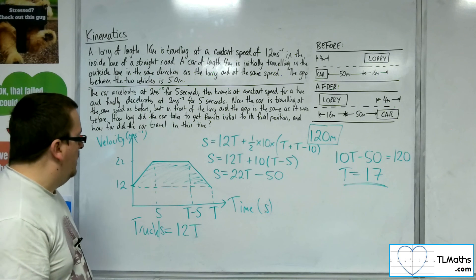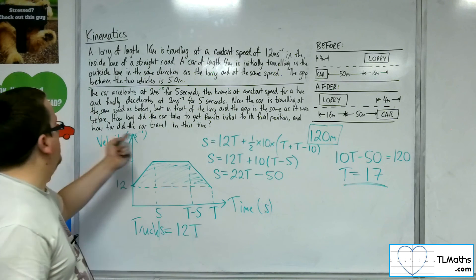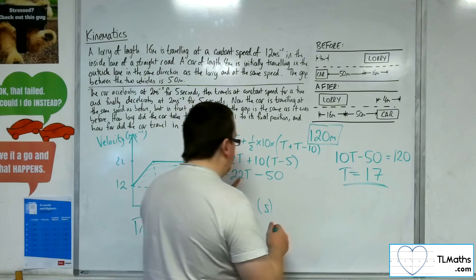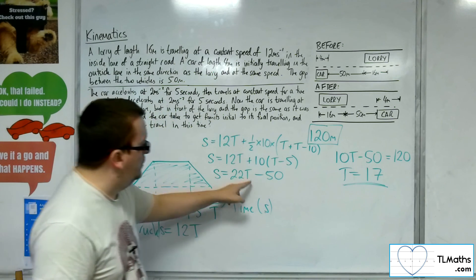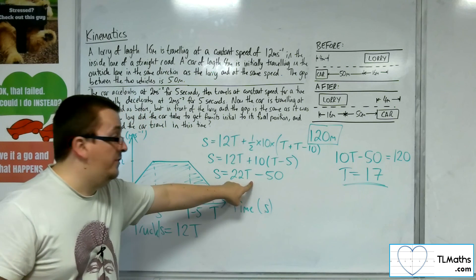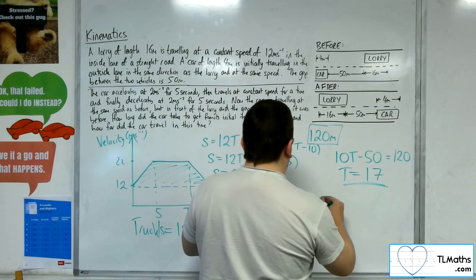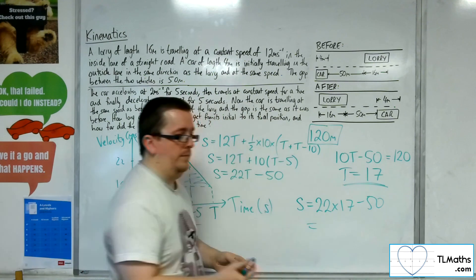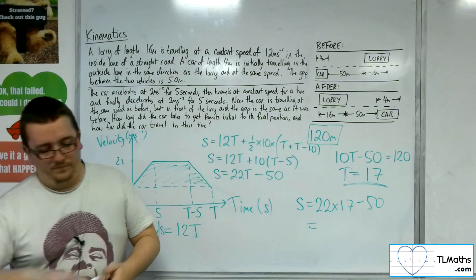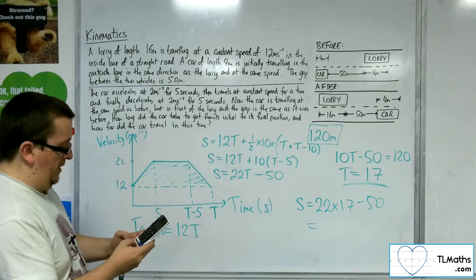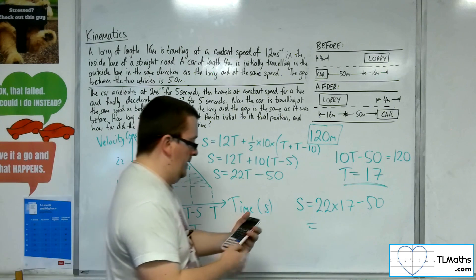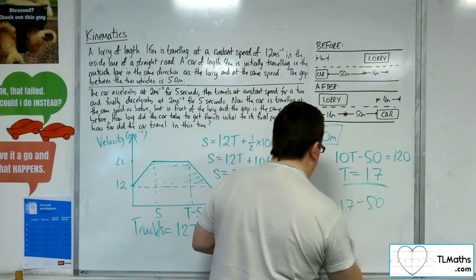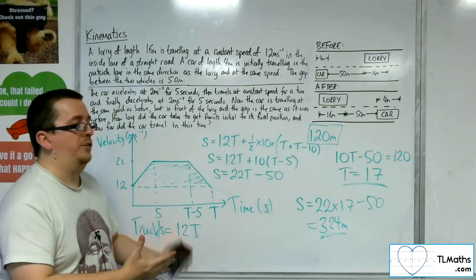The last thing is to figure out how far did the car travel in this time. So how far did the car travel is substituting into this formula here. S is equal to 22 times 17, take 50. 22 times 17, take away 50, and that's 324 metres. And that's the answer to the problem.